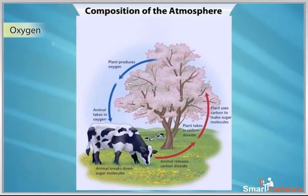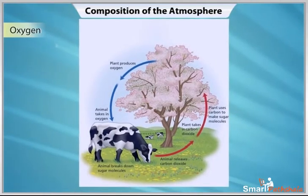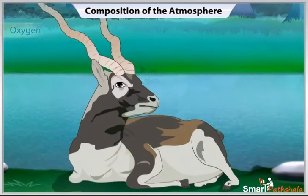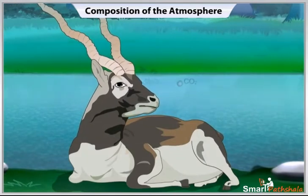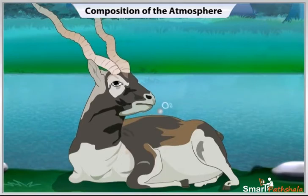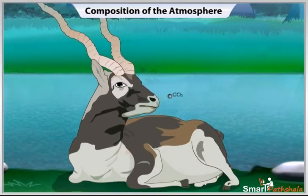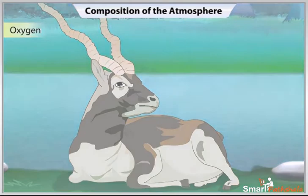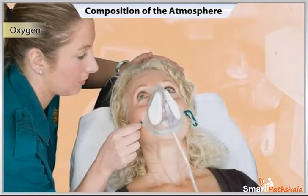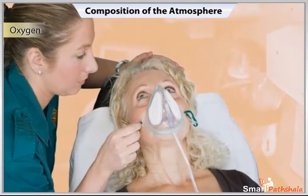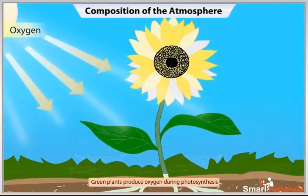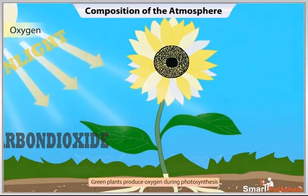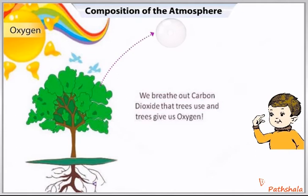Oxygen is the most important of the gases in our atmosphere in relation to animal life. Without it, each of us and most of the animals on earth would die in a matter of just a few minutes. Humans and animals take oxygen from the air as they breathe. Green plants produce oxygen during photosynthesis. In this way, oxygen content in the air remains constant.